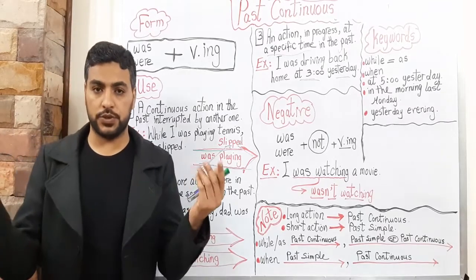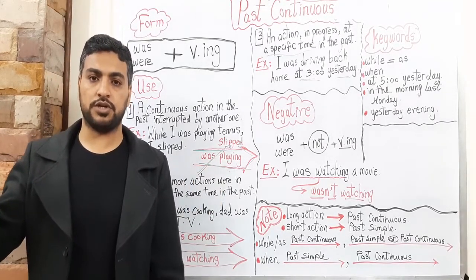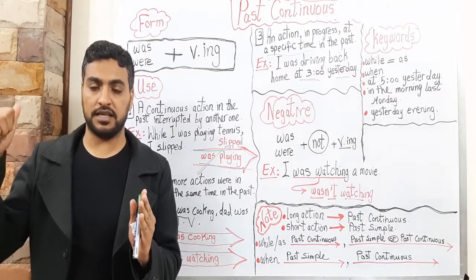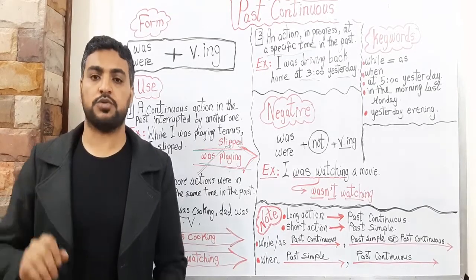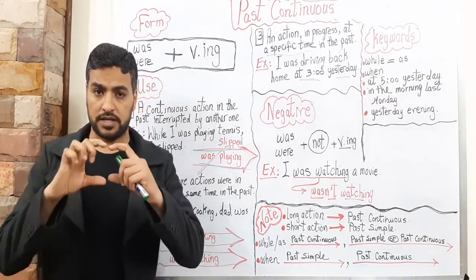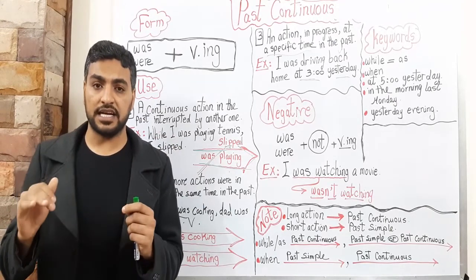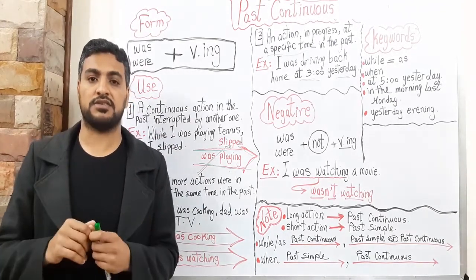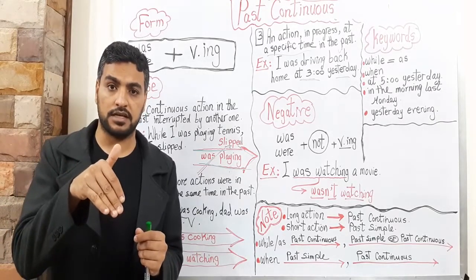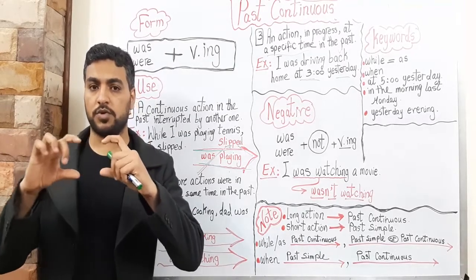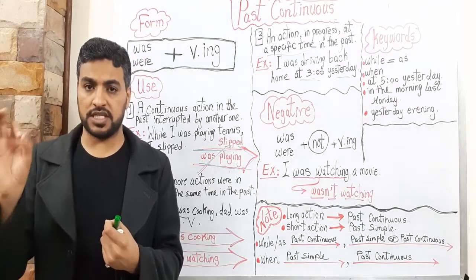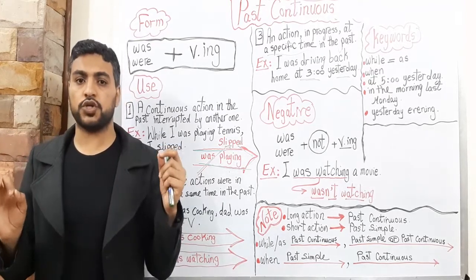When do we use Past Continuous? Number one, we use Past Continuous when we talk about an action which was in progress in the past, and this action was interrupted by another one. The action which was in progress is Past Continuous, and the action which interrupted it — which cut it — is considered Past Simple. For example, while I was walking in the street, I saw an old friend. The continuous action was walking, and the long action is Past Continuous, while the short one is Past Simple.